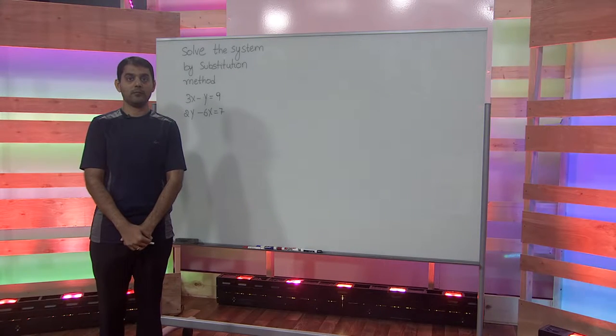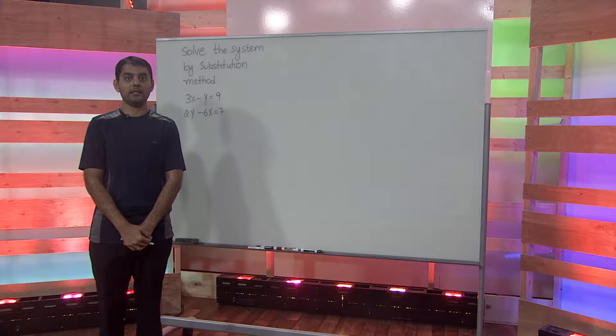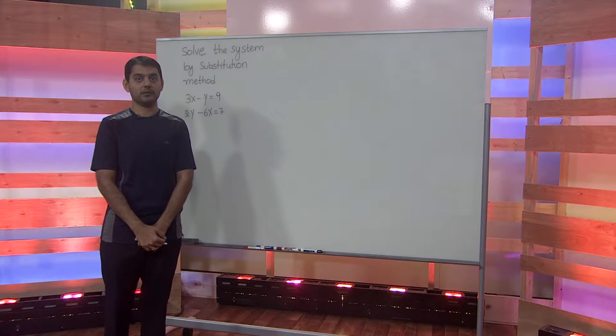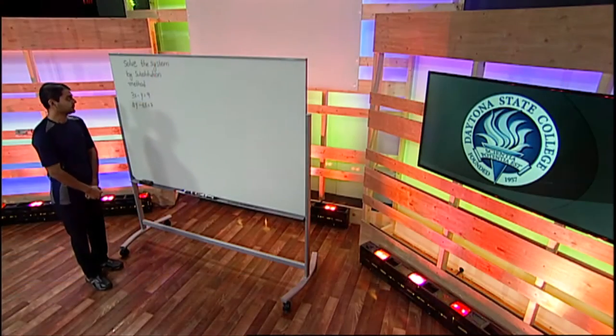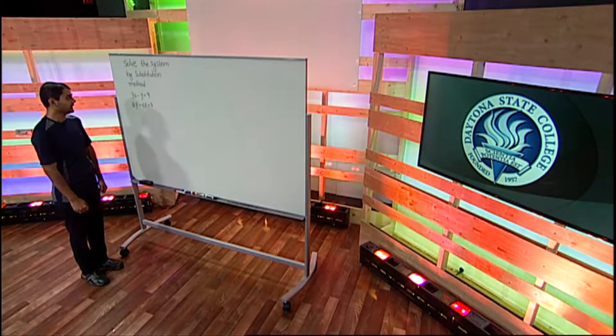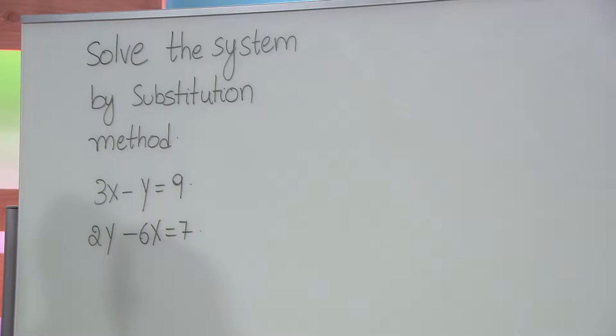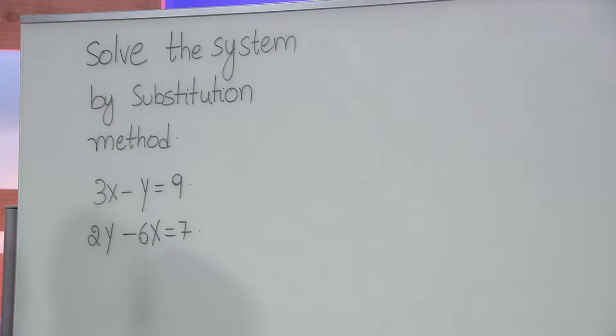In this lecture, we will solve the system of linear equations by substitution method. The given system is 3x minus y equals 9 and 8y minus 6x equals 7. The goal of this problem is to find the values of x and y.